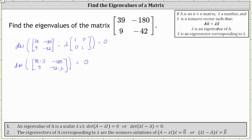The determinant equals the product of (39 minus lambda) and (negative 42 minus lambda), minus the product of negative 180 and positive 9. So the determinant is the quantity (39 minus lambda) times the quantity (negative 42 minus lambda), minus the product of negative 180 and positive 9.